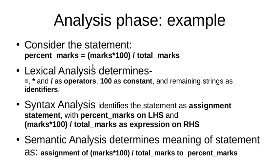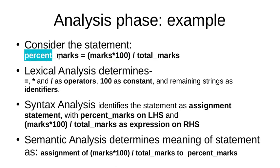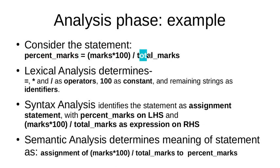The lexical analysis phase for this statement will determine that '=', '*', and '/' are three operators. '100' is a constant value, and the remaining strings — that is, percentage_marks, marks, and total_marks — will be identifiers, that is, variables. This is how the lexical analysis phase works.